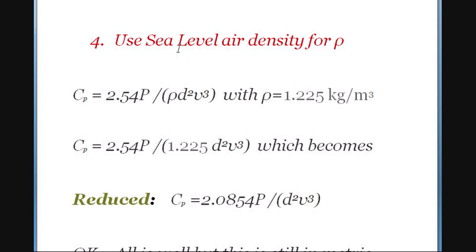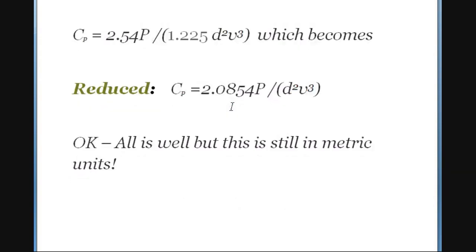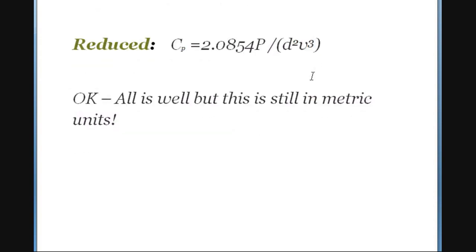So that's what this equation will reduce to coming off of this page: 2.54 times the rated power divided by the density of the air, the diameter squared, and the velocity cubed. So now let's take another substitution here. Let's just assume we'll always, since we never really know the density of the air specifically, most turbines are rated at the sea level air pressure. So since we know the sea level air pressure in kilograms per meter cubed is 1.225, we can substitute that in for rho in the equation. If we do that, it'll reduce further down to this new value here: 2.0854 times the power divided by diameter squared velocity cubed.